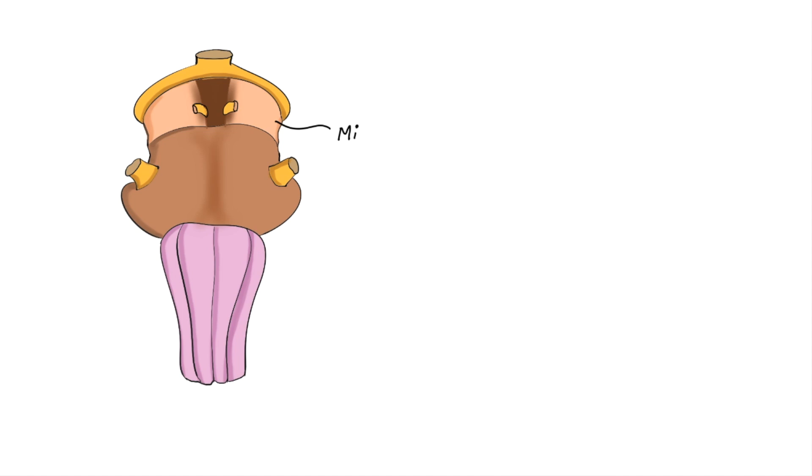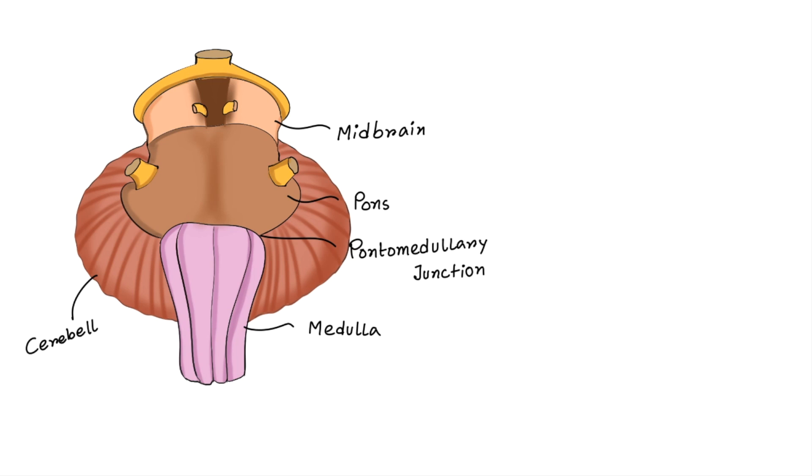Now this is a simple diagram of brainstem. It has three parts midbrain, pons and medulla. This junction between pons and medulla is called pontomedullary junction. This part is called cerebellum. And this is the anterior portion of the brainstem.